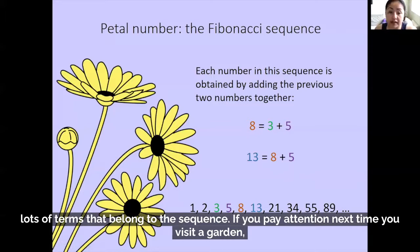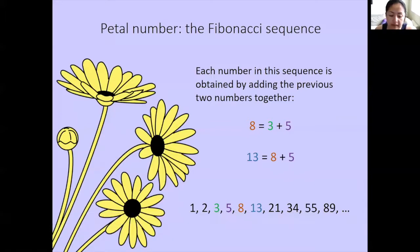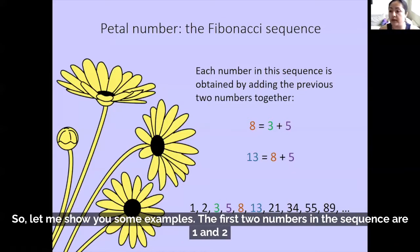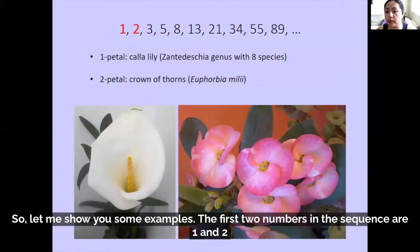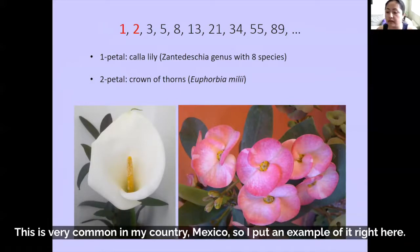If you pay attention next time you visit a garden, it is very rare to find flowers with a number of petals that is not in the sequence. Almost all of the flowers follow these patterns. So let me show you some examples. The first two numbers in the sequence are one and two, and we have lots of examples of single-petal flowers. The first one that probably came to your mind is the calla lily, which is very common in my country, Mexico.